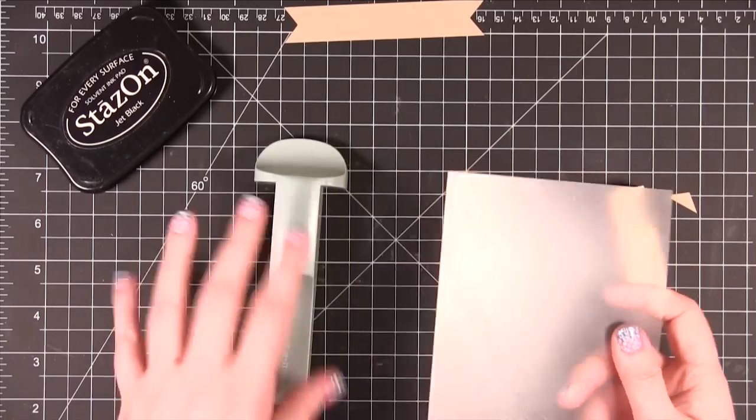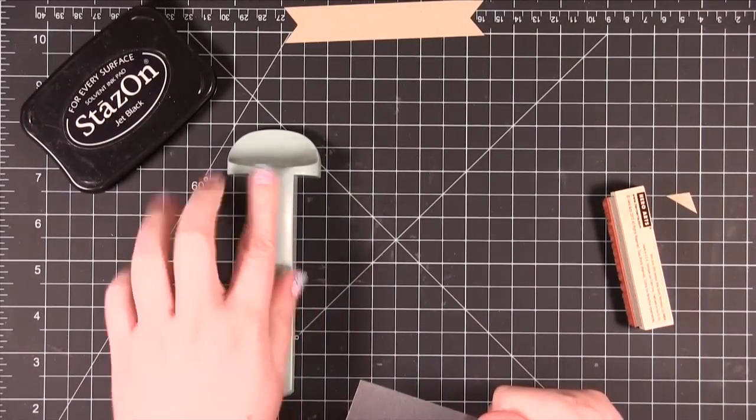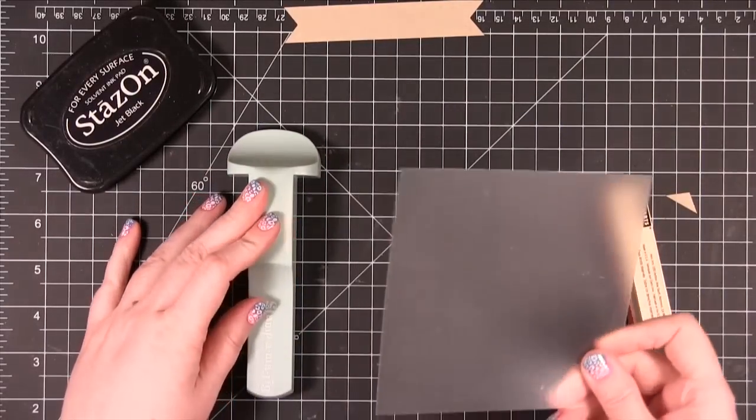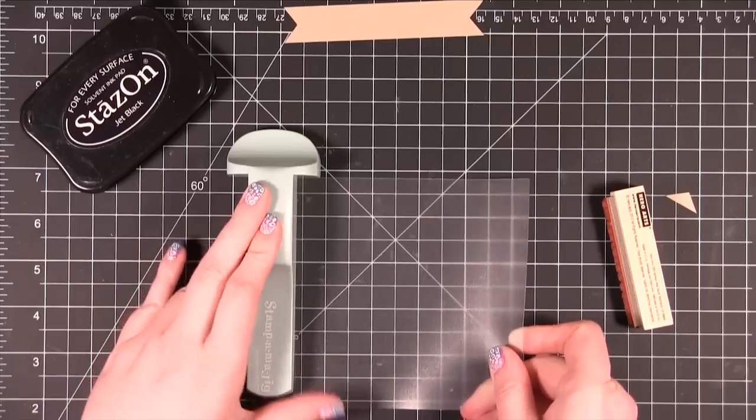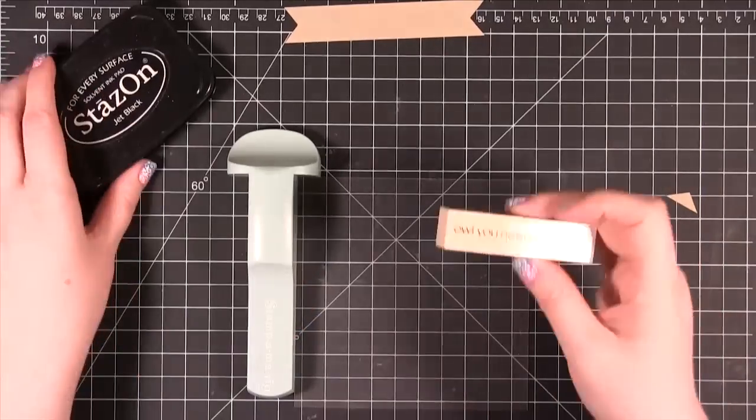So the first thing you're going to do is put down your positioner and it has some foam on the bottom so it's going to kind of sit on your work surface and not go anywhere. You're going to take your imaging sheet and slide it up into that corner really tight.